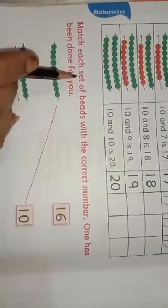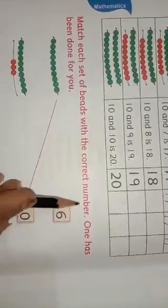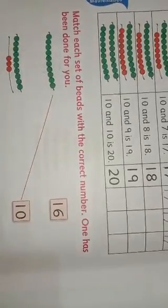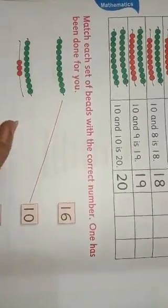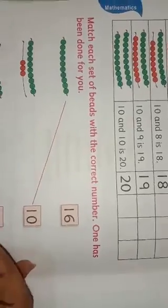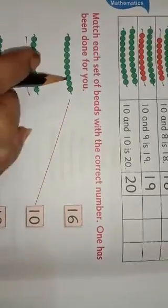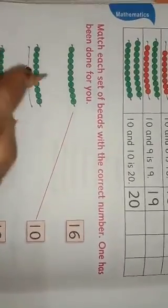Then next. Match each set of beads with the correct number. One has been done for you. Here are given some beads and here are given numbers. One has been done for you. You should count the beads.